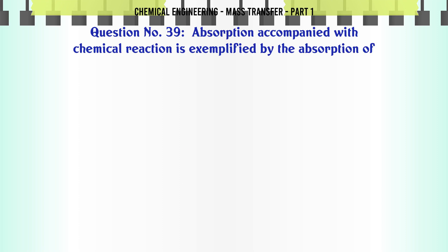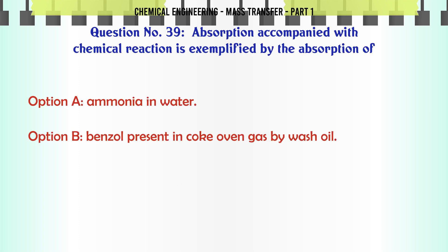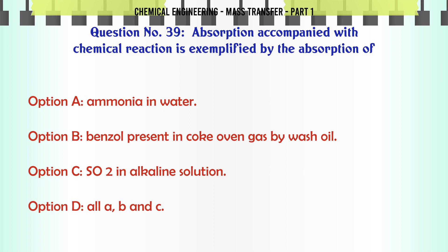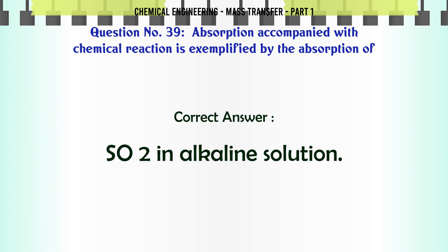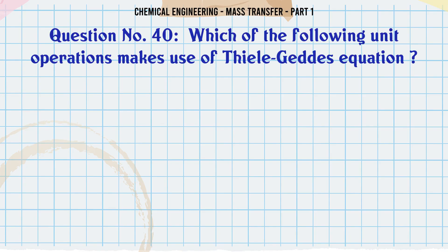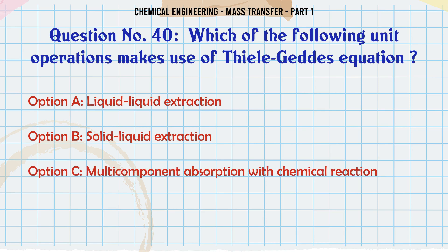Absorption accompanied with chemical reaction is exemplified by the absorption of: A. Ammonia in water. B. Benzol present in coke oven gas by wash oil. C. SO2 in alkaline solution. D. All A, B and C. The correct answer is SO2 in alkaline solution.